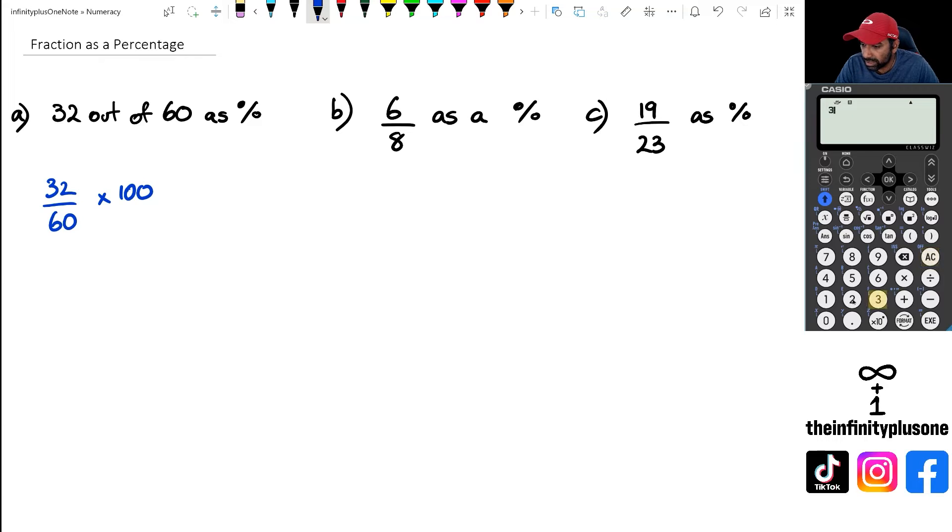Now we are going to use the calculator for this particular question, so we're going to put 32 out of 60 and we're going to multiply it with 100. And when we do this we are going to get roughly 53.33%. So 32 out of 60 as a percentage is going to be 53.33%.